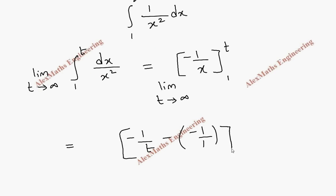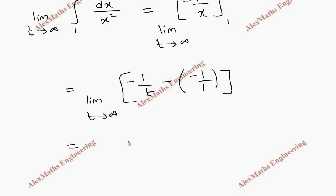So we also have limit t tends to infinity. And this can be written as minus 1 by t plus 1.